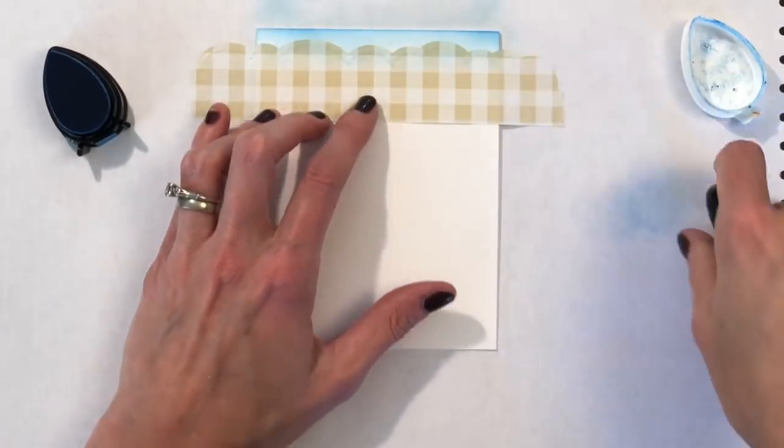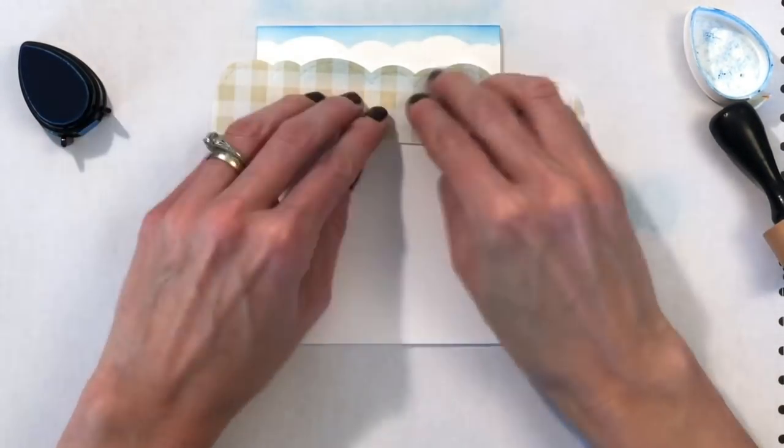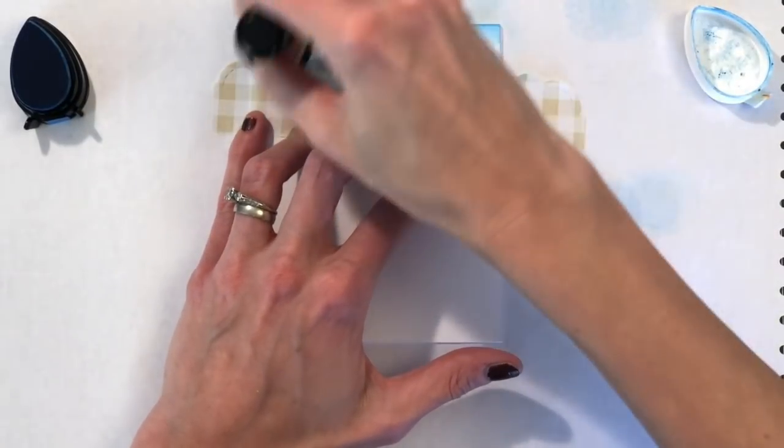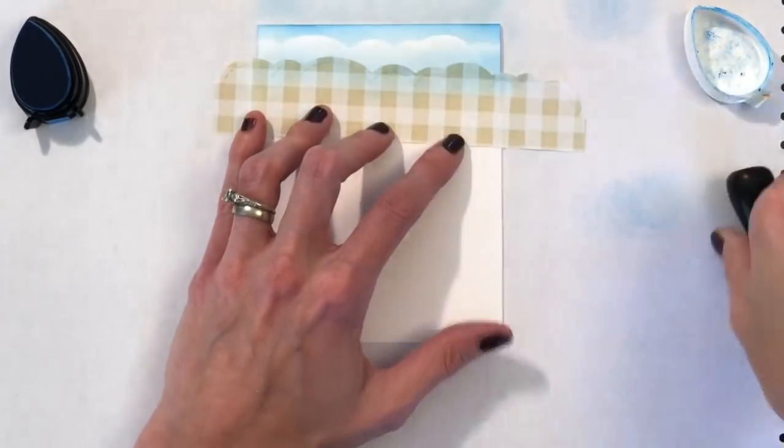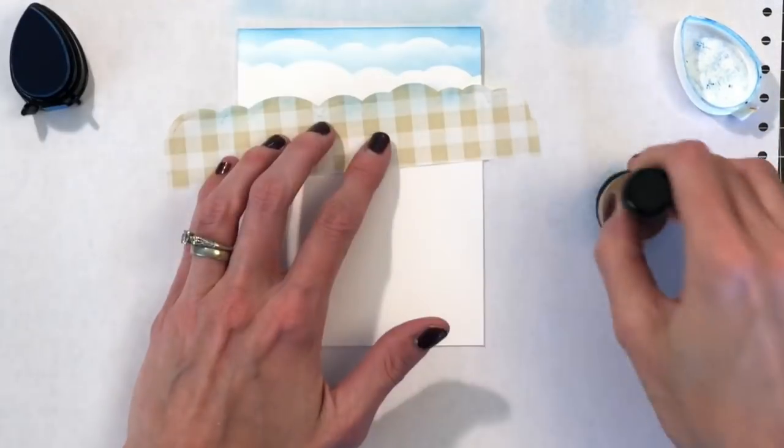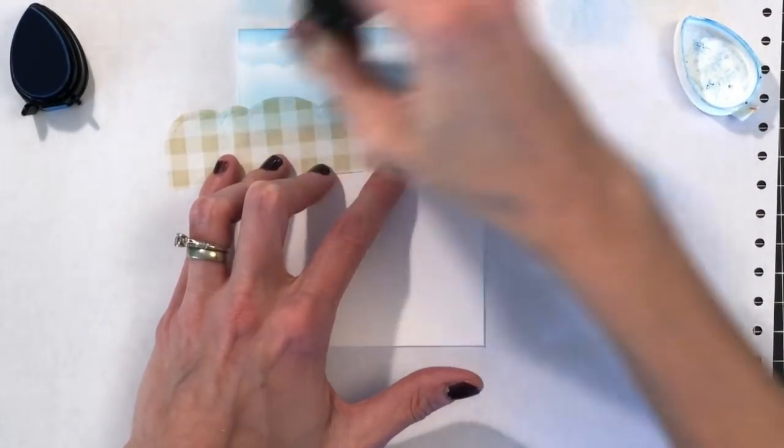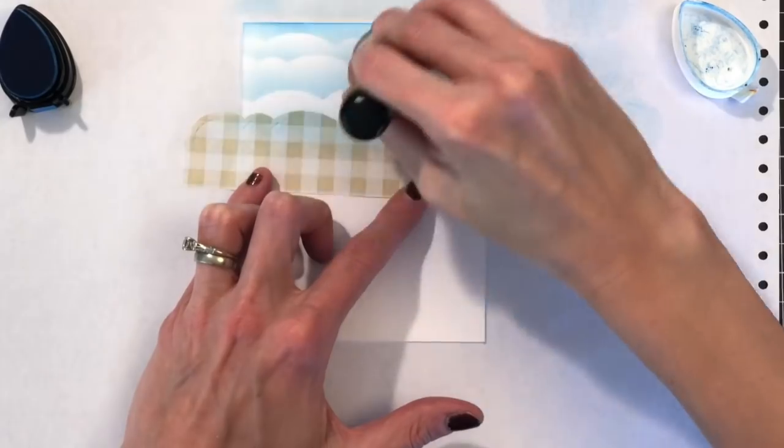And I placed down the scallop side. And now I'm blending with Memento Bahama Blue just a little bit. And you can see how the mask creates a beautiful scallop which mimics clouds. And I'm going to continue moving down, blending a little bit and moving down. I blended the heaviest at the top and I'm lightening my pressure and using less ink as I work my way down. Because I want this also to have an ombre or a gradation where it's darker at the top of the card and then it gets lighter as I work my way down.